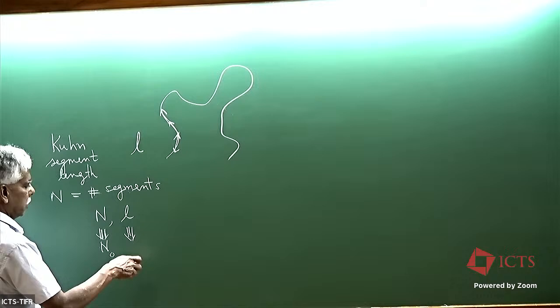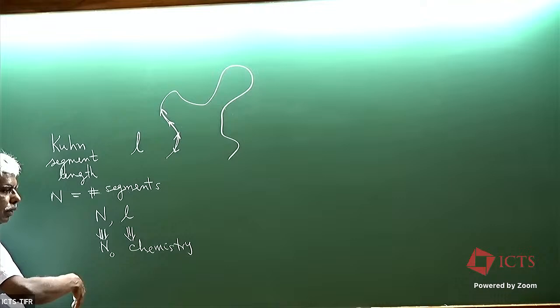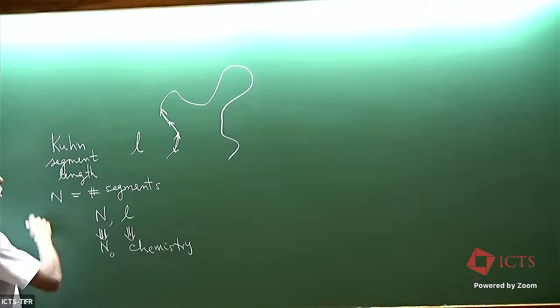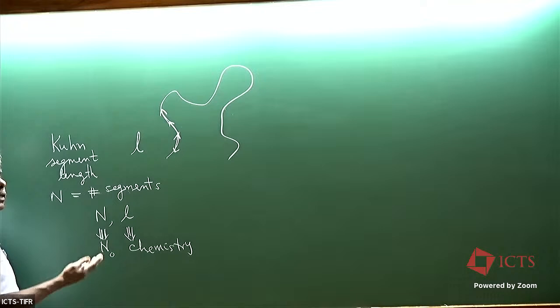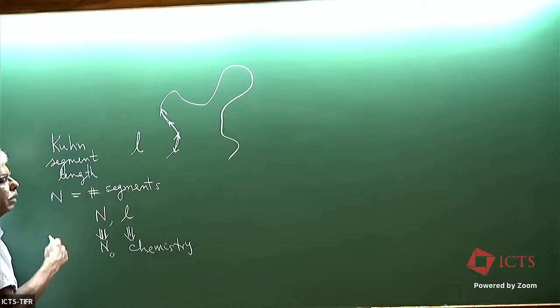So these parameters N and L map to the real degree of polymerization of the polymer. This is also mapping to the chemical details of rotation, local rotational barriers, bond length, bond angles, diagonal angles, et cetera. So let me write: local chemistry, which is extremely important as we are going to see today. That's how we make the modern polymer age. These are the two important parameters which capture the chemical details.